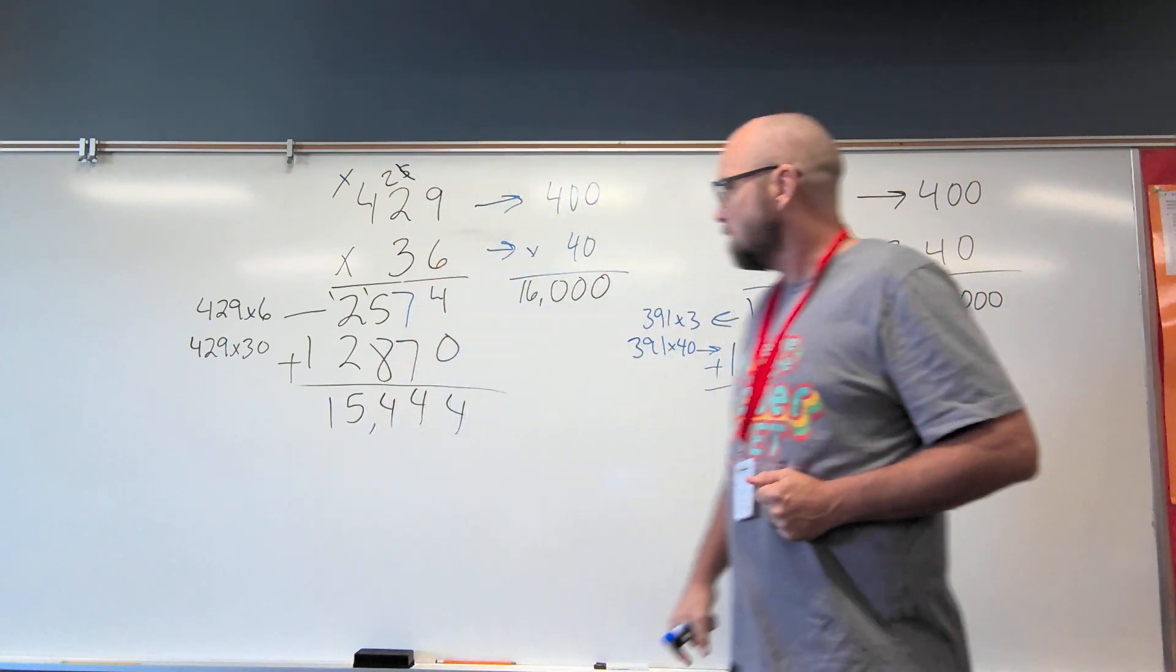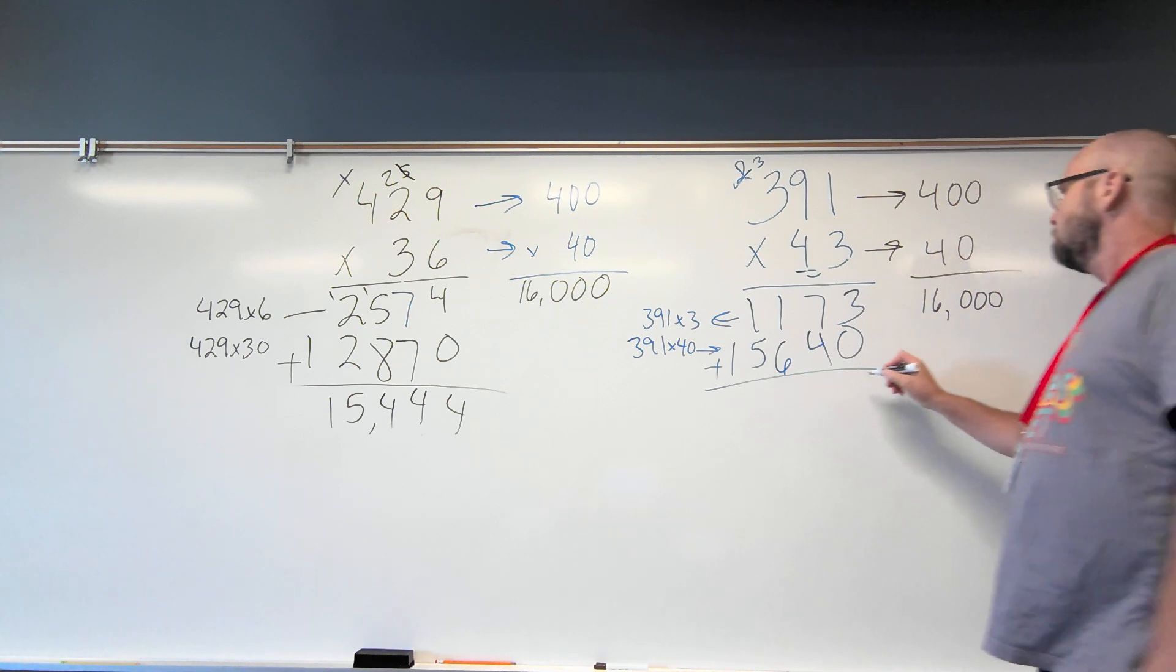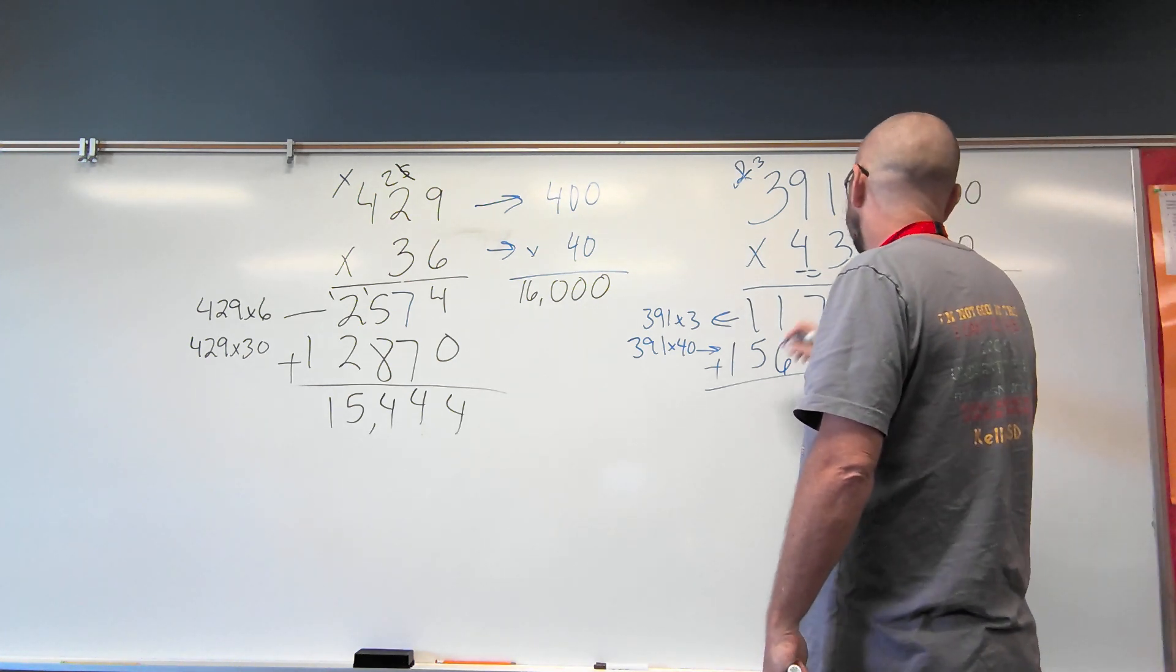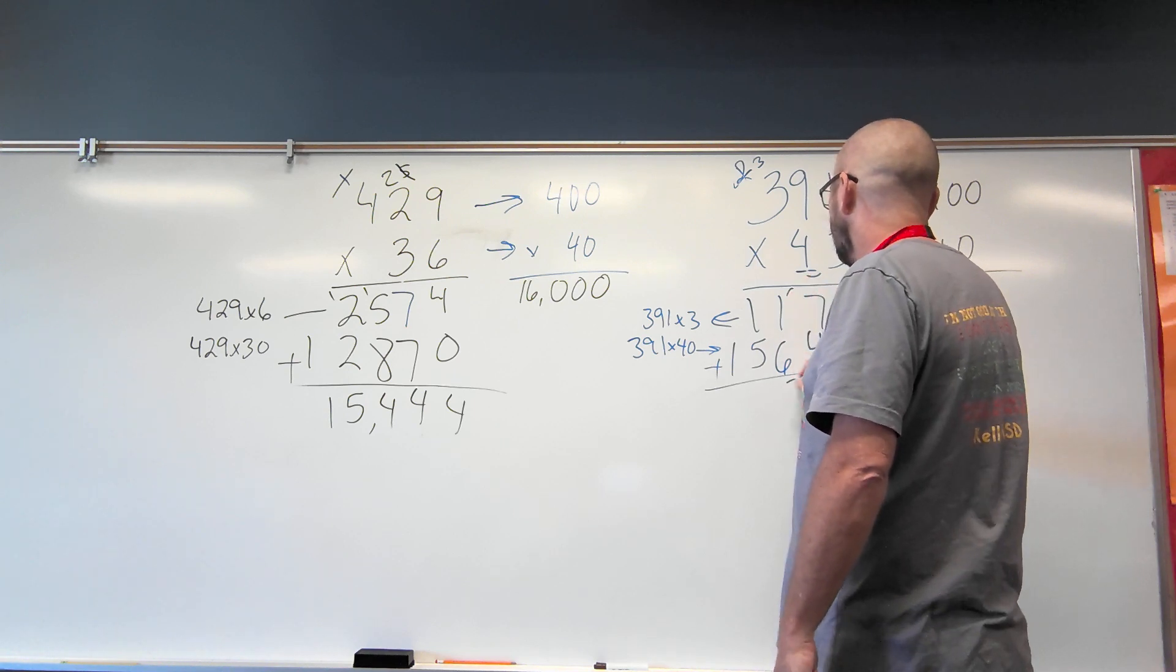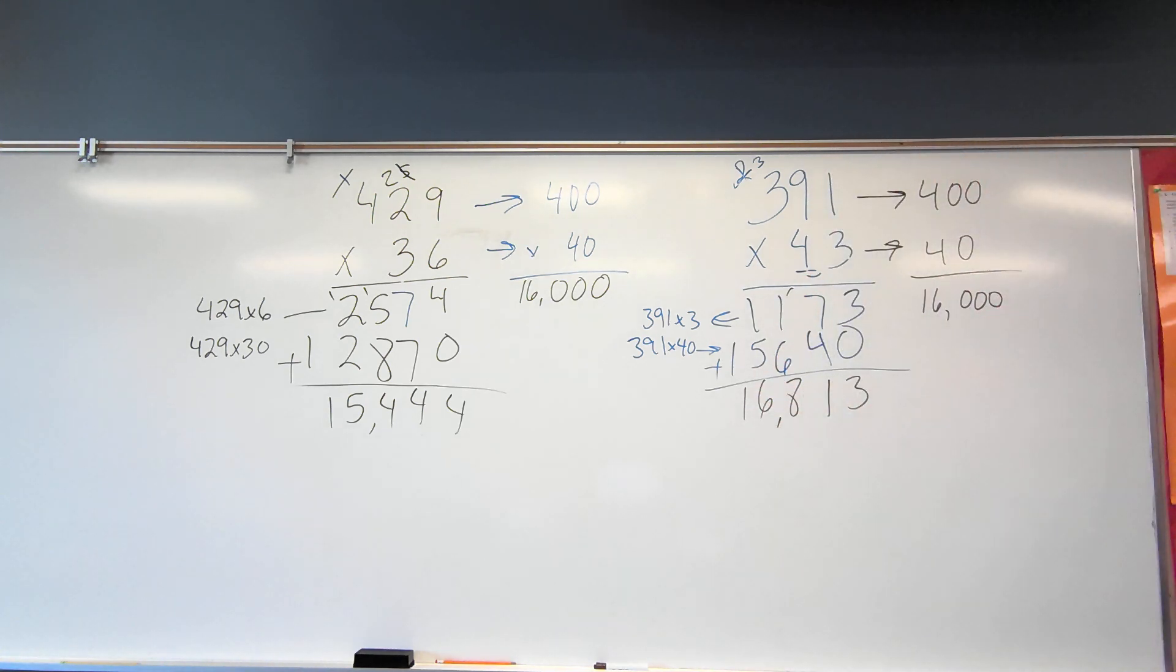Okay, now we find the sum of these two products. We add these products together. Sixteen thousand eight hundred thirteen. If I did my math right, if I didn't, let me know.